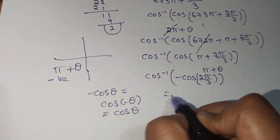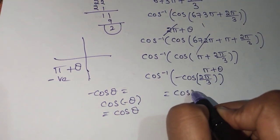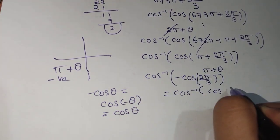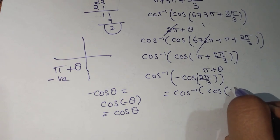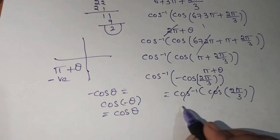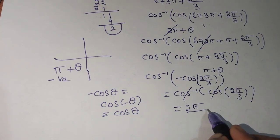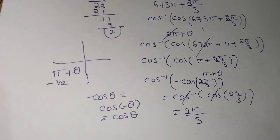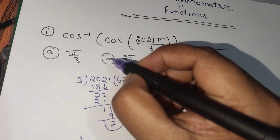So cos of minus θ value is cos θ, so we write cos inverse of cos of minus 2π/3, which becomes plus. Cancel cos inverse and cos, the answer is 2π/3. So check the options, option b.